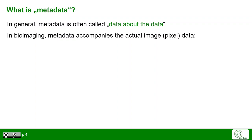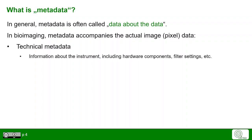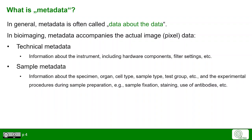In bioimaging, that would be the data accompanying the pixel values that are recorded with a microscope. Metadata consists of technical metadata — any information about the instrument with which the images were recorded — but moreover also the sample metadata: all the information that you need to understand the image, given the biological specimen, the sample type, the fixation methods, and so on.